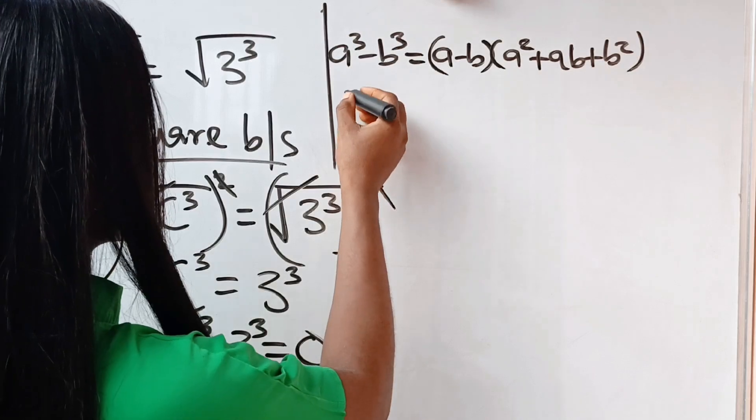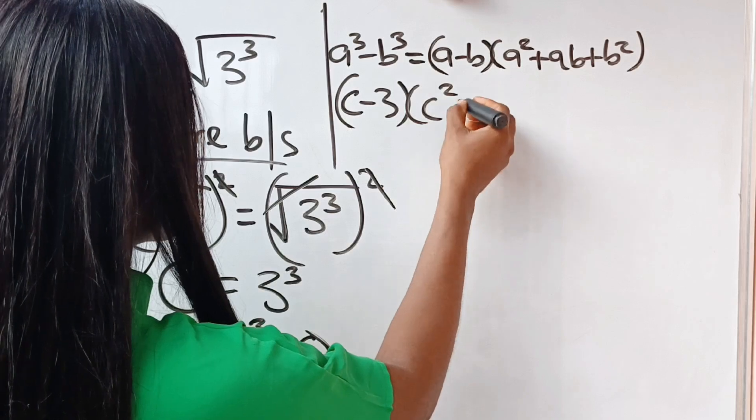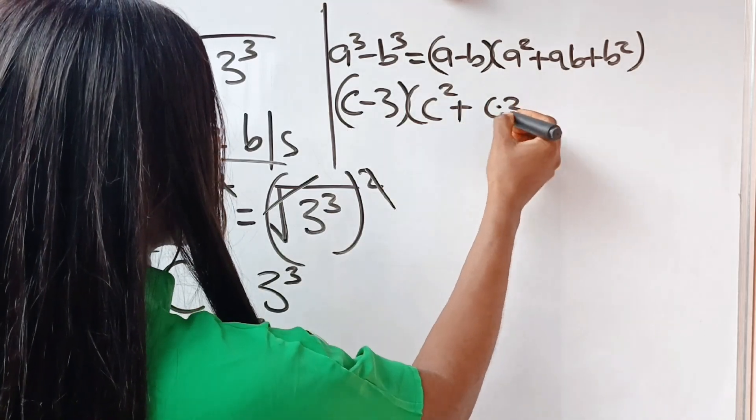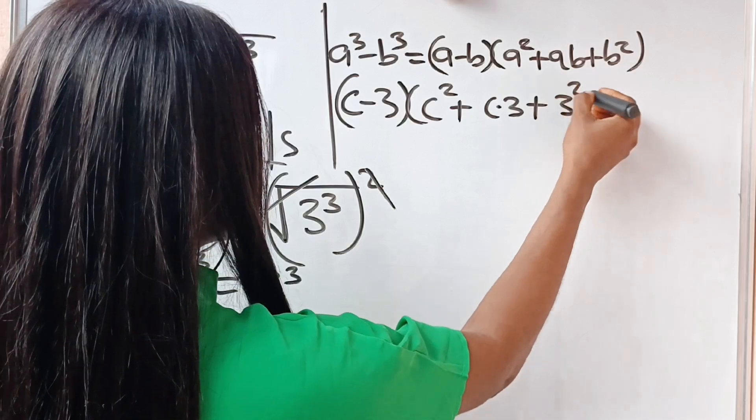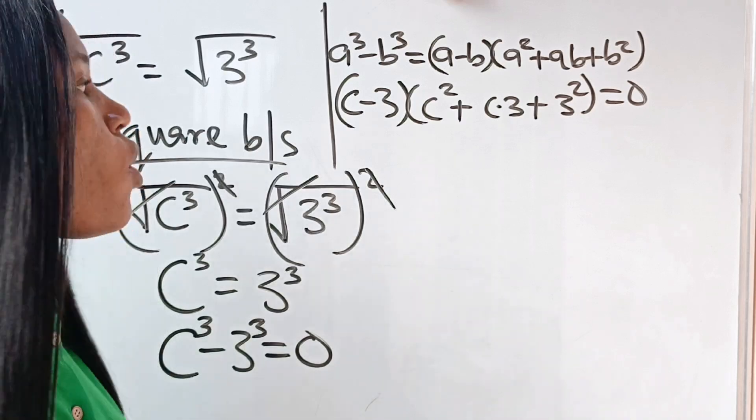That is what the algebra identity states. So that means that c to the power of 3 minus 3 to the power of 3 will give us c minus 3 multiplied by c squared plus c multiplied by 3 plus 3 squared. And everything is equal to 0.